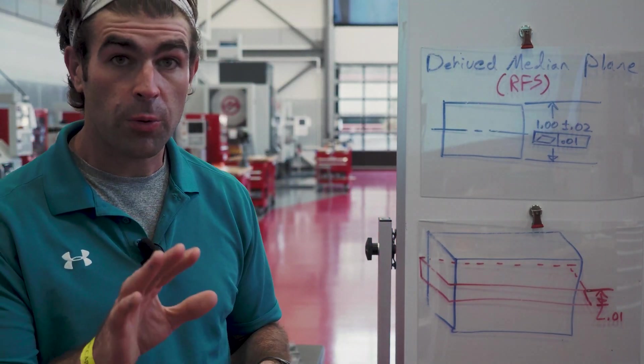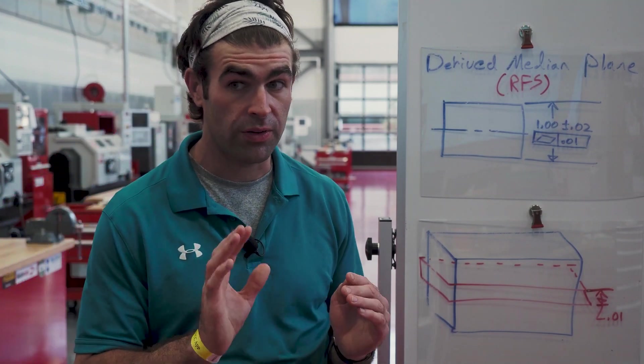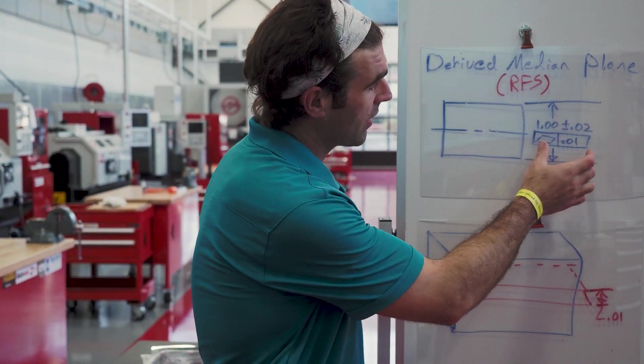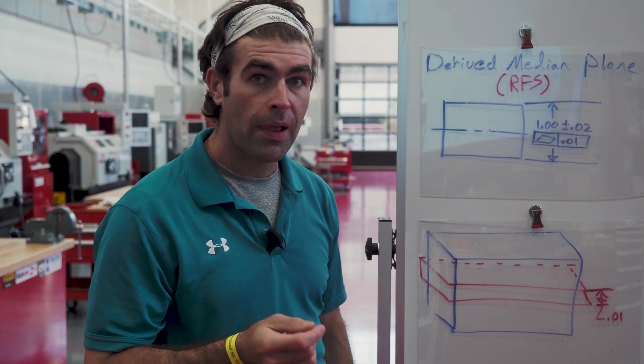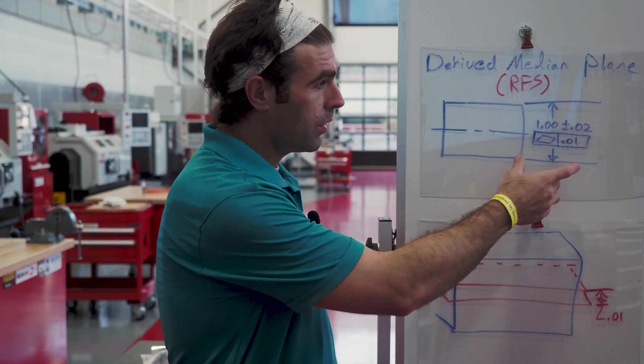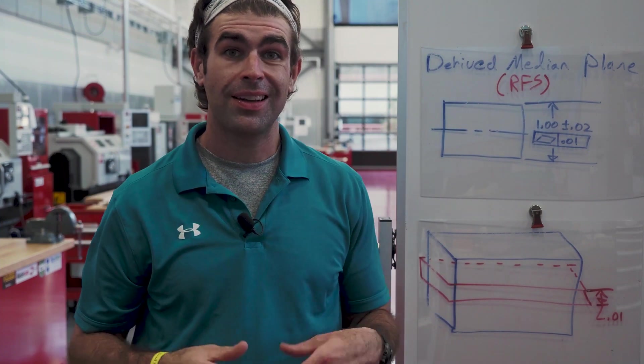Now let's talk about flatness applied to a derived median plane. This is similar to straightness applied to a derived median line, except now we have a 3D feature with two parallel planes to contend with. The way to identify this as a different inspection is by looking at the feature control frame — if it's underneath or adjacent to the size dimension, it applies to that feature of size. For flatness, it's always going to be a width feature, so a rectangular-type part.